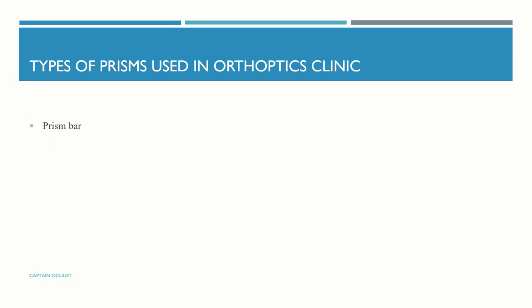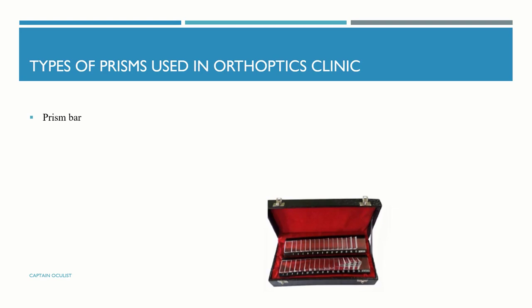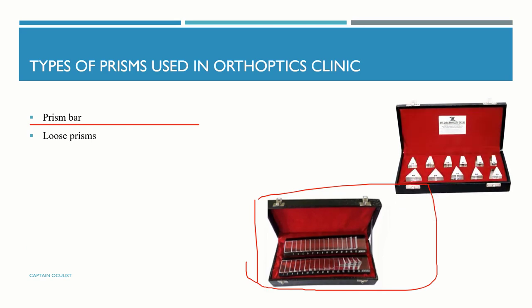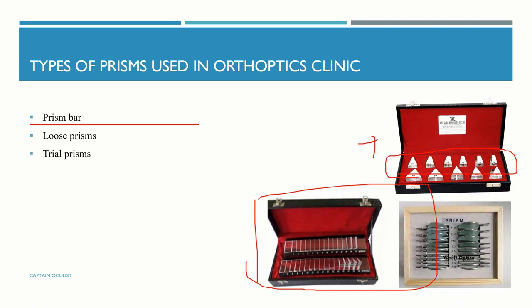Let us discuss the types of prisms used commonly in clinics. We have prism bars — a graduated series of prisms mounted on a frame and used in ocular diagnosis, as you can see in this picture. We also have loose prisms, which are single pieces of prisms, as seen in the picture. Trial prisms are found in a trial box, which is why they are called trial prisms.